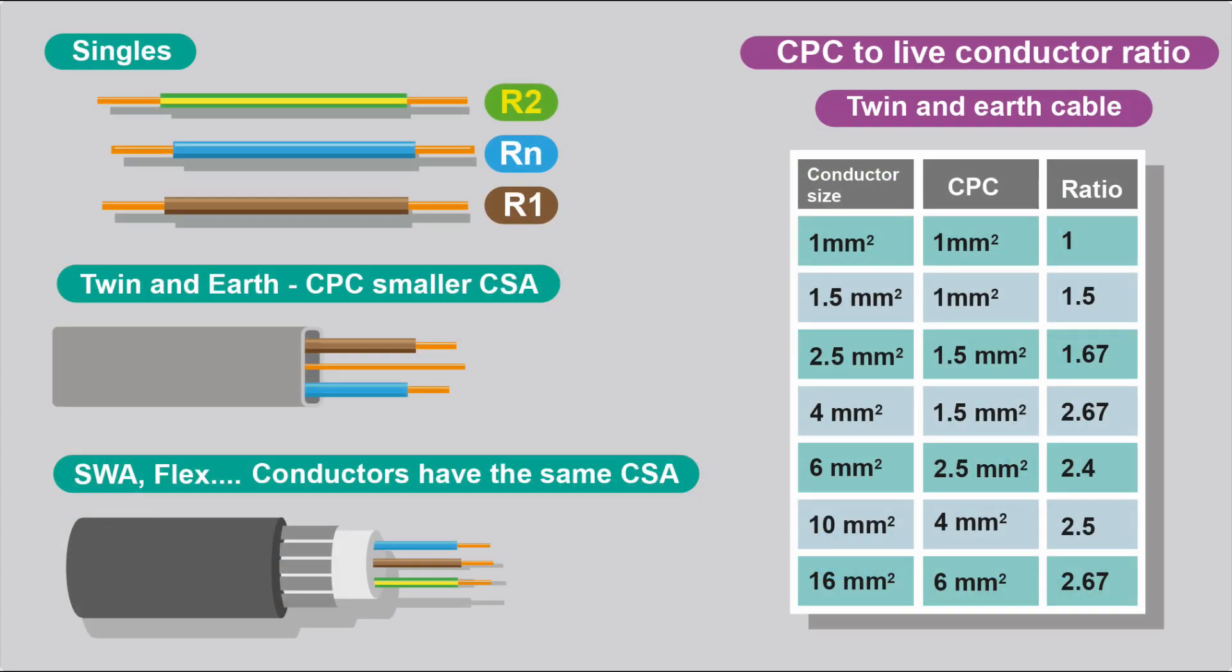Remember we've got a milliohm per meter reading for each conductor size. Now, sometimes the conductors in the cable aren't the same size. If you're using singles, you generally use the same size conductors, and in flex and SWA, the conductors usually have the same cross-sectional area. But in twin-and-earth, the CPC has a smaller cross-sectional area than the live conductors, the line and the neutral.